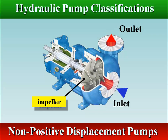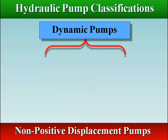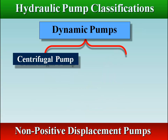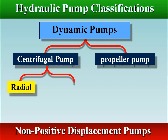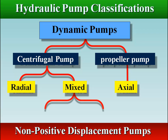In non-positive displacement pumps, the pressure produced is proportional to the rotor speed. In other words, the fluid is displaced and transferred using the inertia of the fluid in motion. Centrifugal and propeller pumps are examples of non-positive displacement pumps.